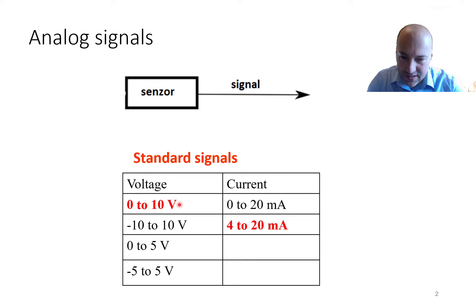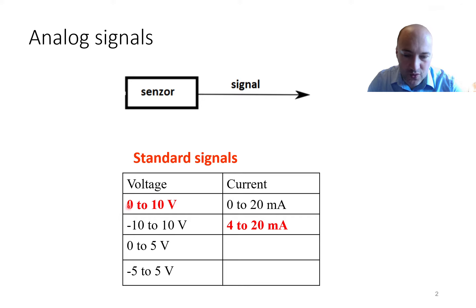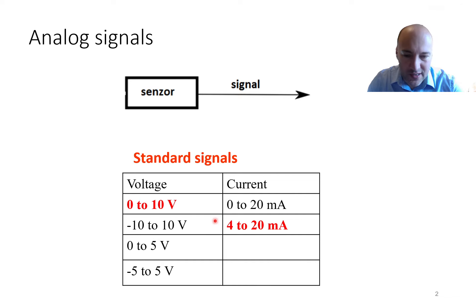What does this mean? If I measure a variable such as temperature, the minimal value of my variable corresponds to the minimal value of my range. For example, if I measure temperature between minus 50 and 100 degrees Celsius, then minus 50 corresponds to 0 volts and 100 degrees corresponds to 10 volts. For the current signal it is similar — the minimal value corresponds to 4 milliamps and the maximum to 20 milliamps. You can connect such a sensor to any control system such as a programmable controller.